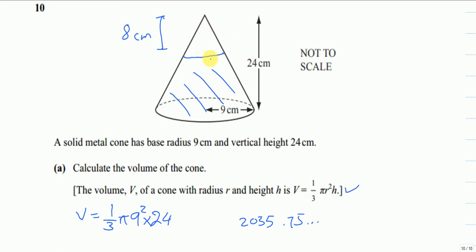The radius will be less than 9 cm, and we have to calculate it. Using ratios: height is to radius. When the height was 24 cm, the radius was 9 cm.